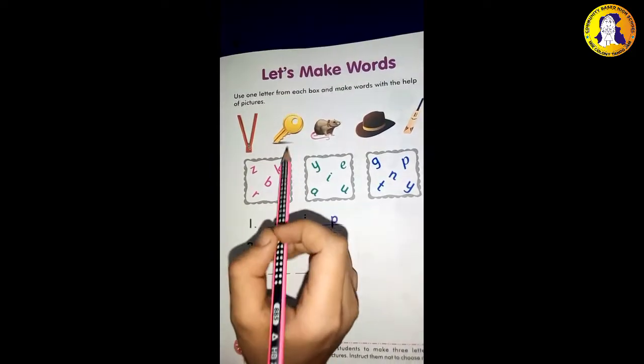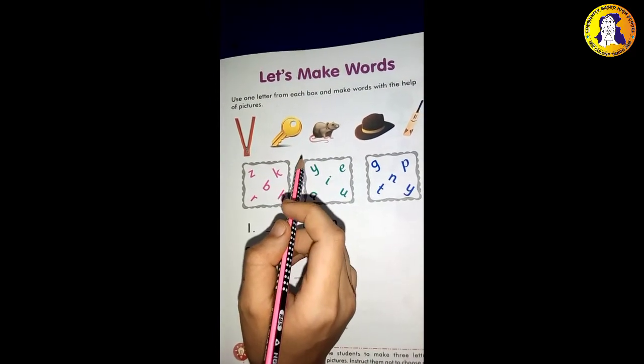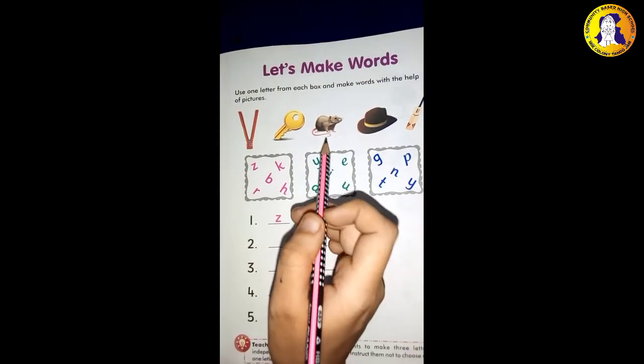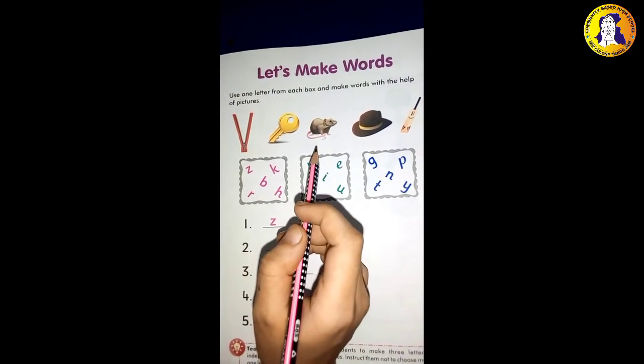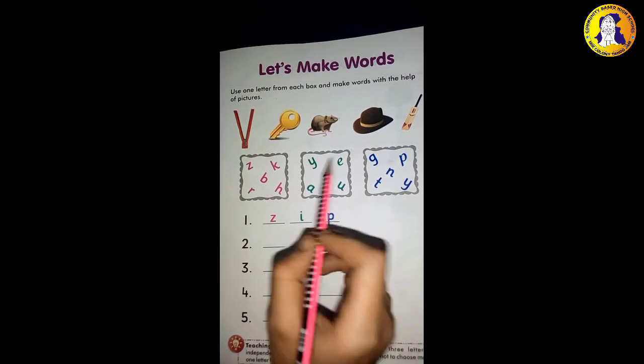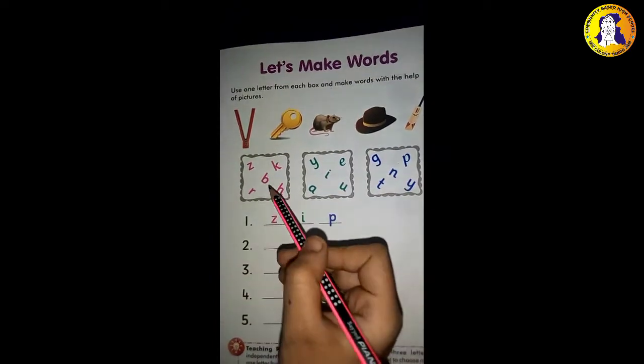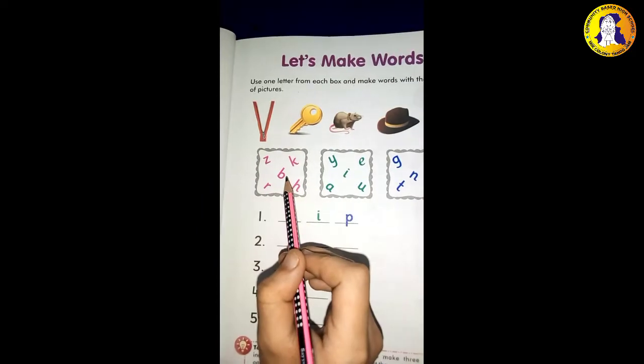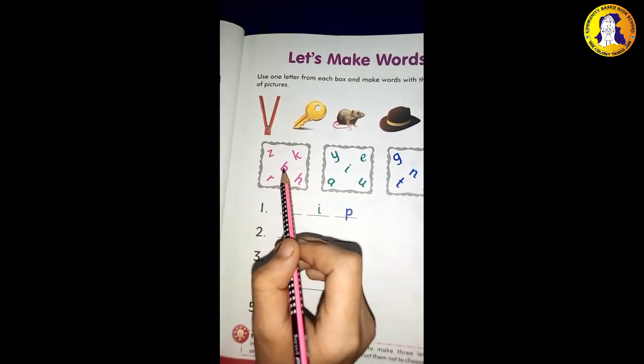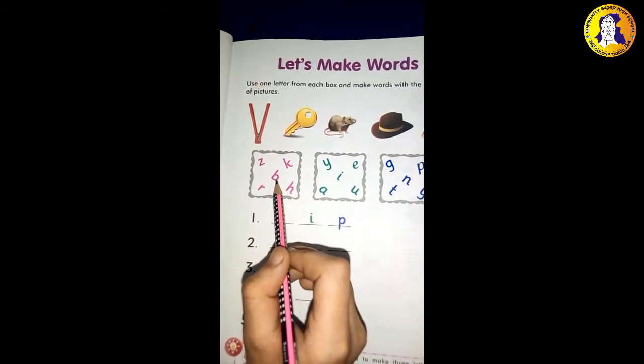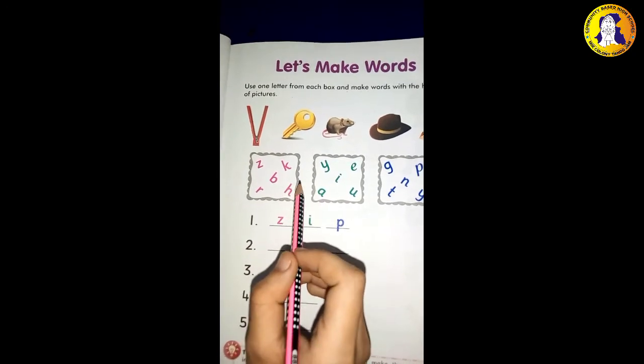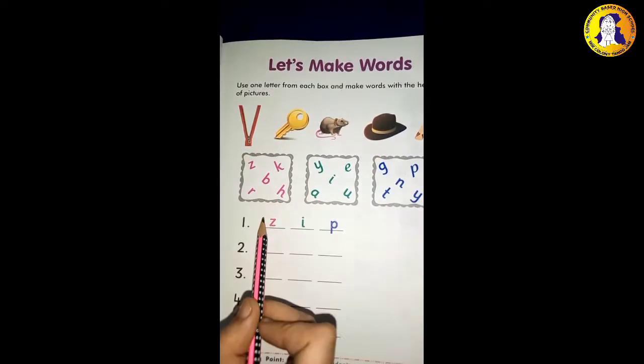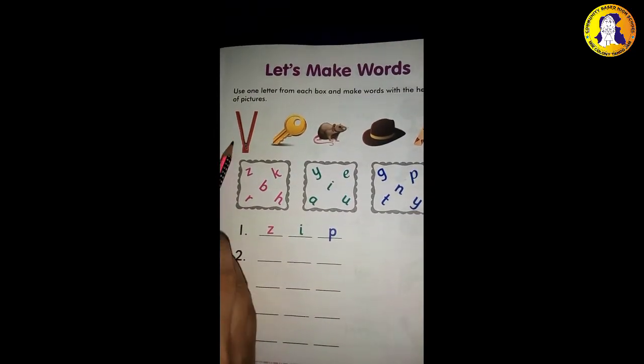Let's make words students. Use one letter from each box and make words with the help of pictures. Use one letter means use one letter from each box. Make words with the help of pictures. The pictures are given.